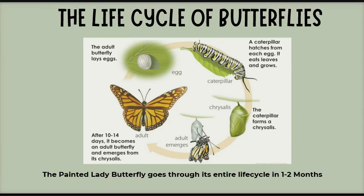Life Cycle of Butterfly. The adult butterfly lays eggs. A caterpillar or larva hatches from each egg — it eats leaves and grows. The caterpillar then forms a chrysalis. After 10 to 14 days it becomes an adult butterfly and emerges from the chrysalis. The painted lady butterfly goes through this entire life cycle in one to two months.